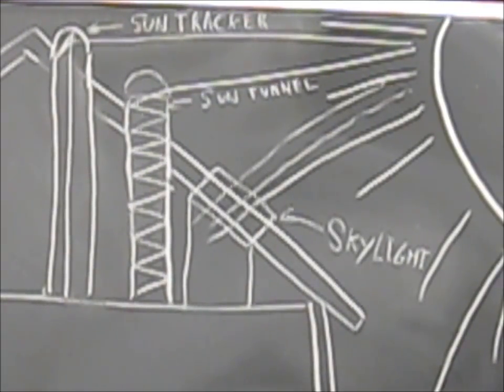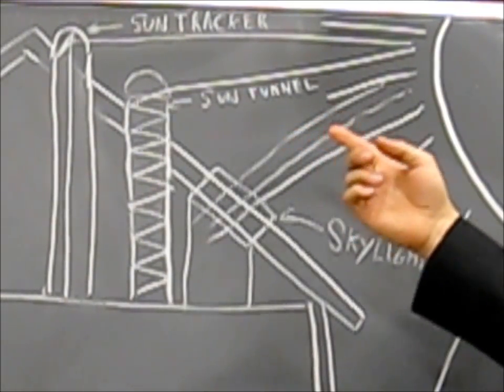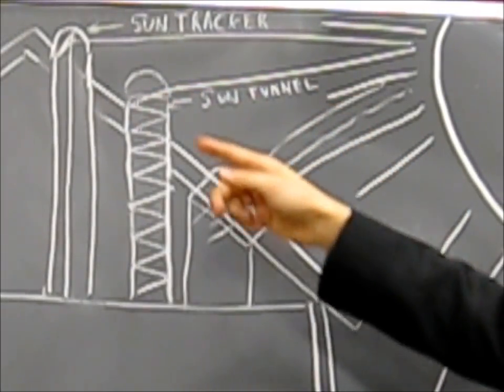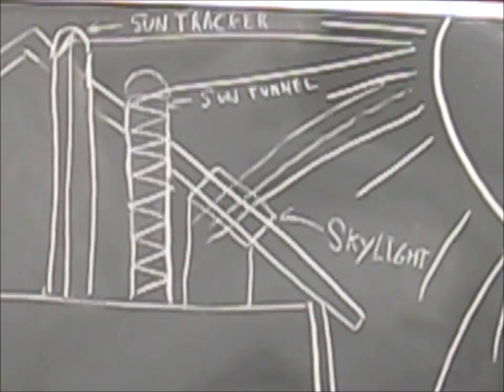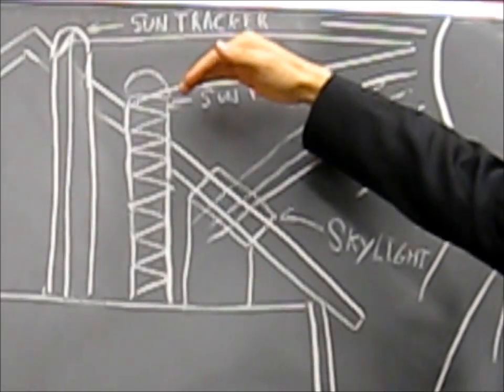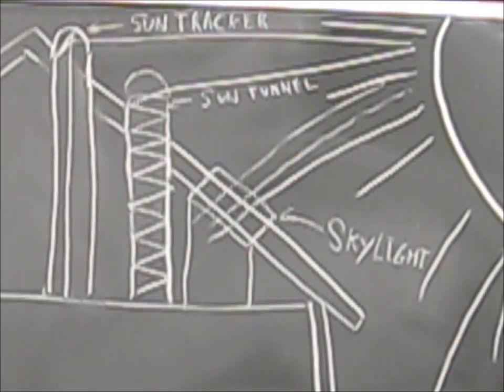Then there's something innovative, a sun tunnel. It consists of a dome, usually made of acrylic, and a flexible pipe with a reflective capacity. Sun enters through the dome and goes down the pipe into a room, which can also be at the interior of a house.